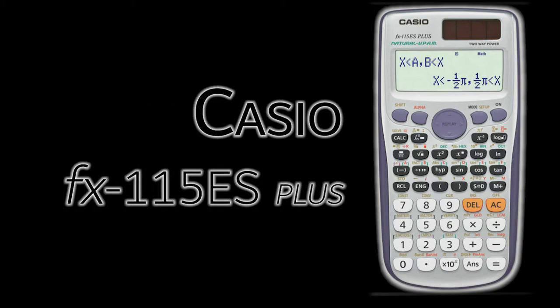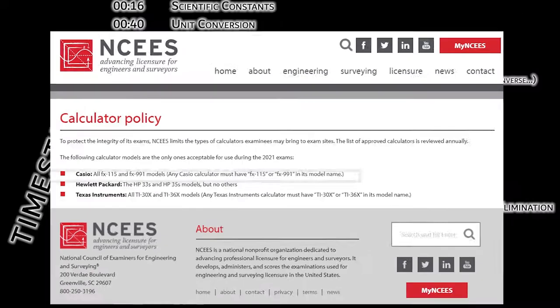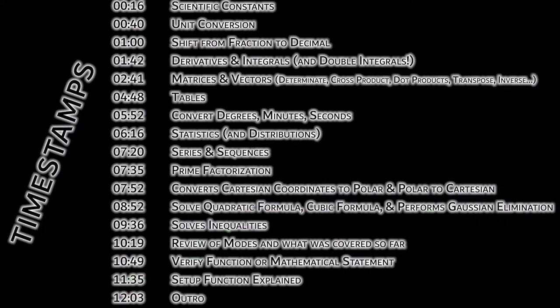Today I'm going to be reviewing why I think the Casio FX115ES Plus is the best calculator to take and use on your FE exam and just for engineering in general. Please look at the timestamps in the description as there's many functions that this calculator can do, so skip around to reference exactly what you need.